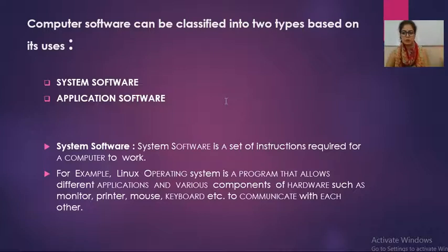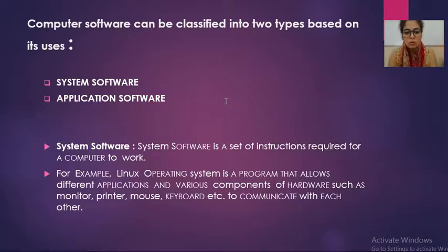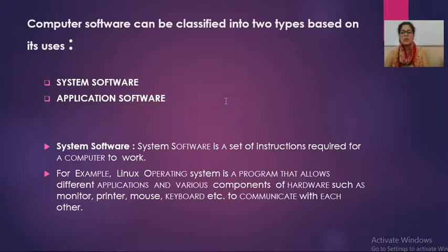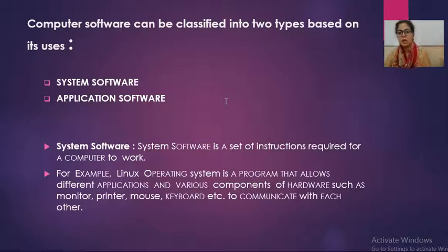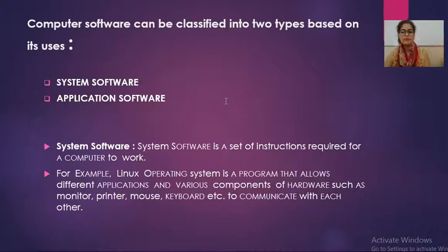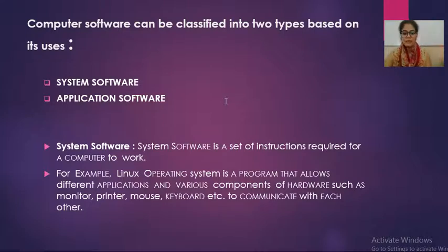What is system software? As the name is system, this type of software is required when we have to operate any system. When we have to start any device or operate any machine, we need some basic software or basic instructions to start the machine, operate the machine, and control the machine. All these types of software come under system software. The definition of system software is: system software is a set of instructions required for a computer to work.